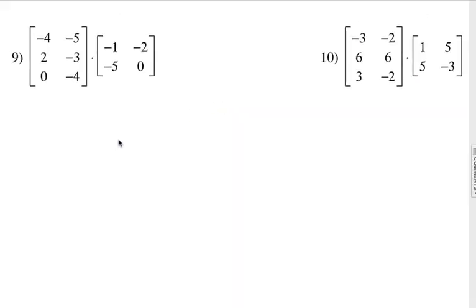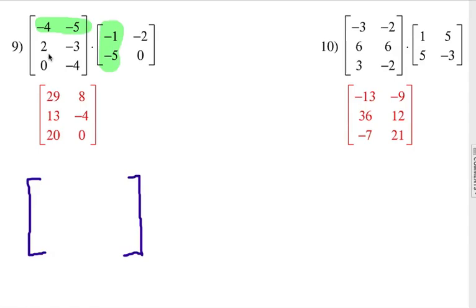Now remember, in this problem set, you need to try this on a piece of paper. And then continue listening and watching, and we'll see if you're right. Go ahead and try these 2, numbers 9 and 10. So we've got this first row, and compared to this first column.